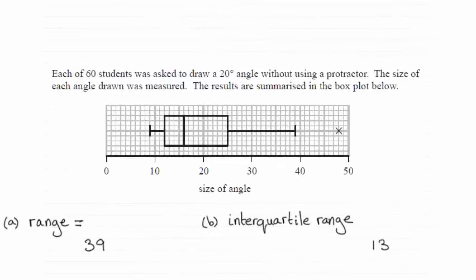Hi there. I've got two very quick questions here where we had to find the range and the interquartile range for this data shown on the box plot. You can see the range is 39 and the interquartile range is 13.